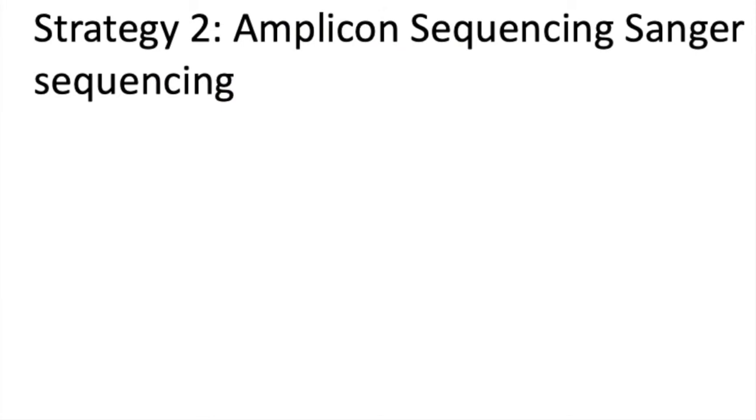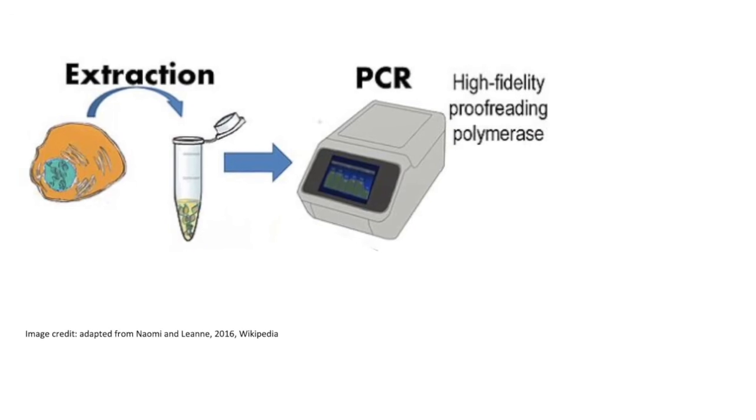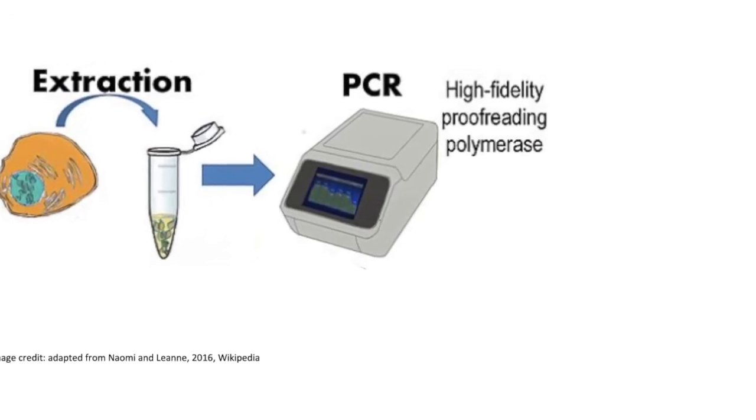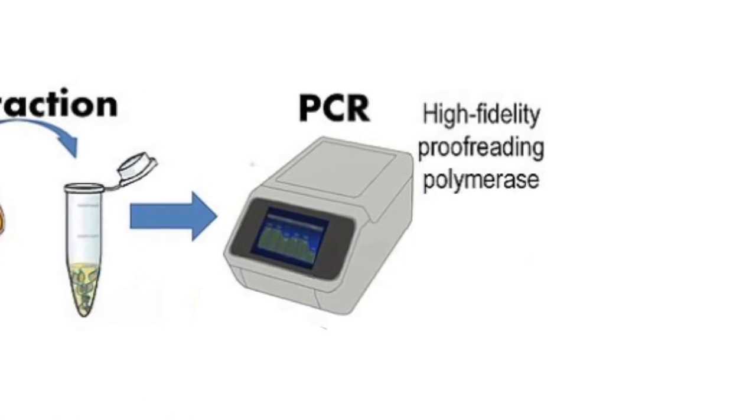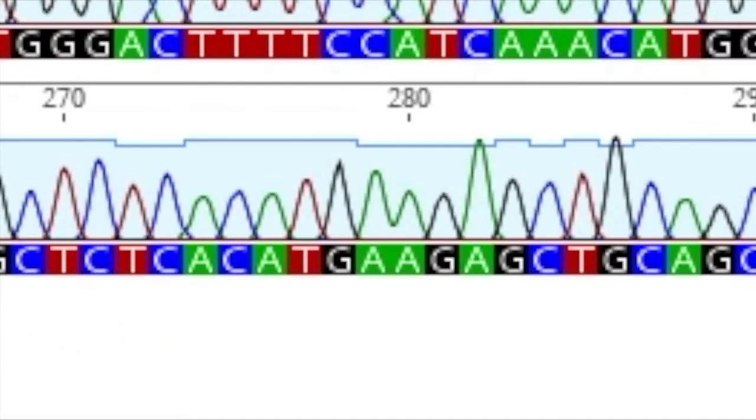But before we get to step two, this is the other strategy you can use to see if editing has occurred, and that is the Amplicon Sequencing via Sanger Sequencing. So Amplicon Sequencing, you'll have your PCR product that amplifies the region of interest, and then you can submit that to a sequencing facility to do Sanger Sequencing on.